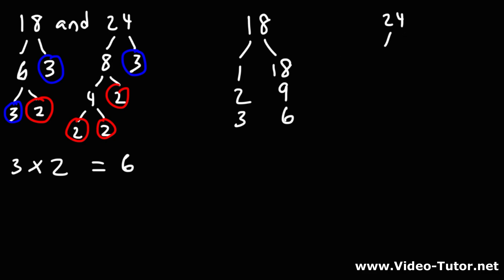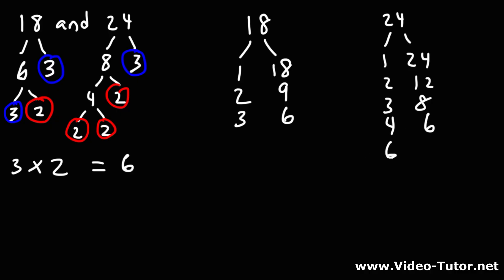Let's do the same for 24. 24 divided by 1 is 24, 24 divided by 2 is 12, 24 divided by 3 is 8, 24 divided by 4 is 6. 5 doesn't go into 24, and if we divide it by 6, the numbers will reverse, which means we can stop there.